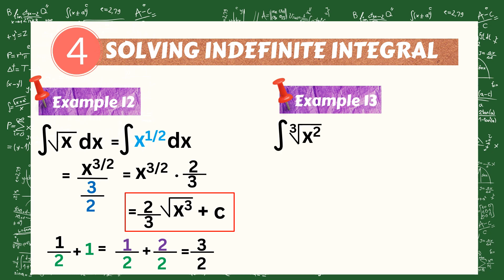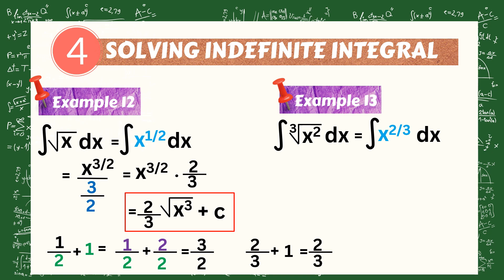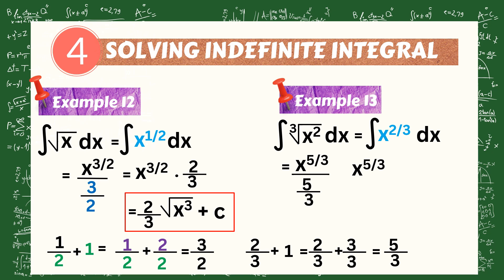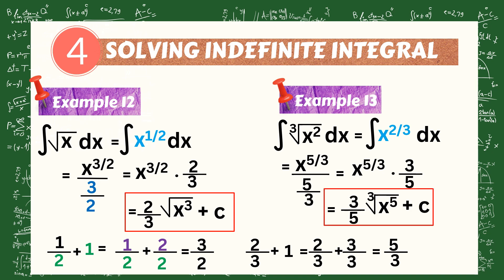Another example: evaluate the integral of the cube root of x squared dx. Rename the cube root into a power: the integral of x raised to the power of 2/3 dx. Apply the power rule: 2/3 plus 1 equals 2/3 plus 3/3, which equals 5/3. So we have x raised to the power of 5/3 over 5/3. Simplifying: x to the 5/3 times the reciprocal of 5/3, which is 3/5. The final answer is 3/5 times the cube root of x raised to the power of 5, plus C.